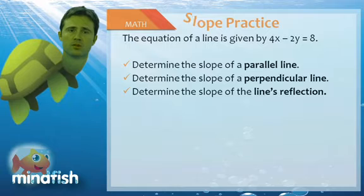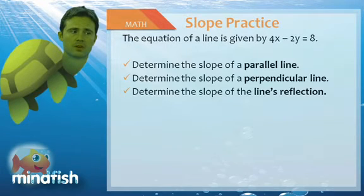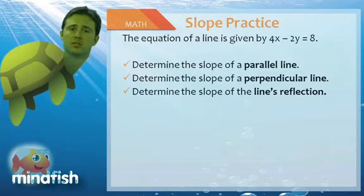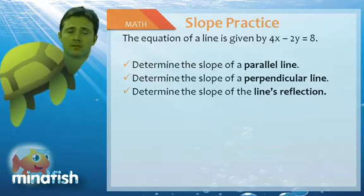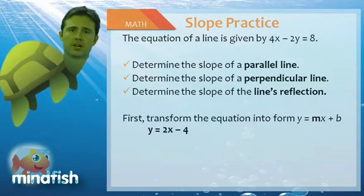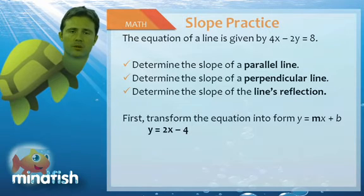So let's try a few slope practice problems. So if the equation of a line is given by 4X minus 2Y equals 8, determine the slope of the line parallel, the perpendicular, and the reflection. So first, before we can do anything, we have to get the equation in the form Y equals MX plus B. Doing so, it will yield the equation Y equals 2X minus 4. And now we're done.